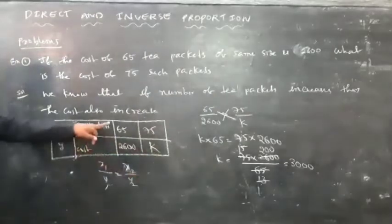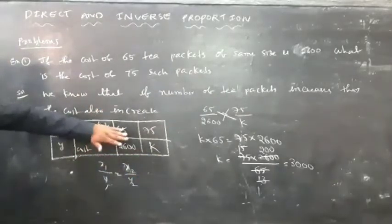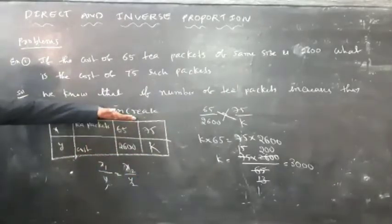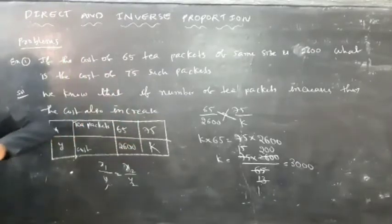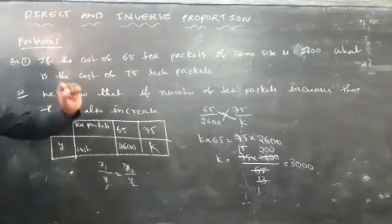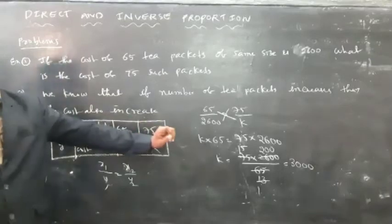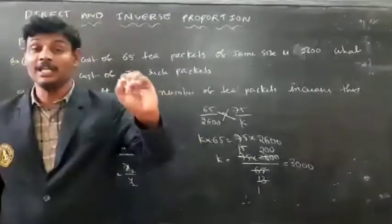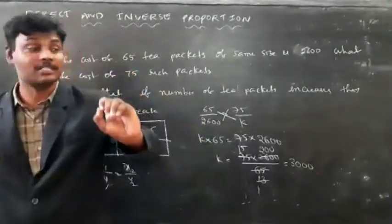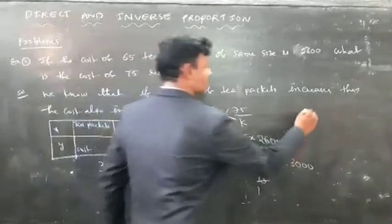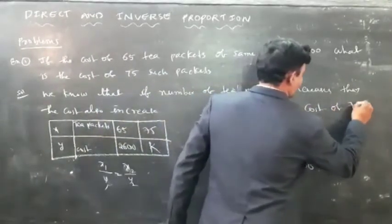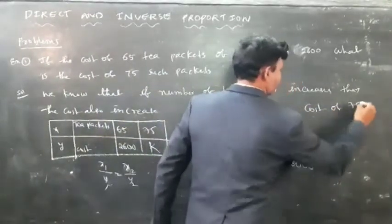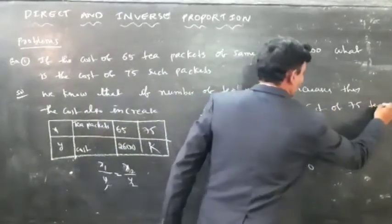So here, the cost of 65 tea packets is 2600 rupees. After finding the cost of 75 tea packets, the answer is 3000 rupees. Cost of 75 tea packets is 3000.